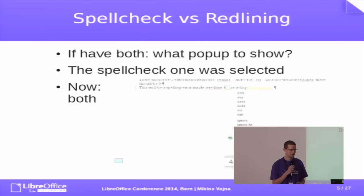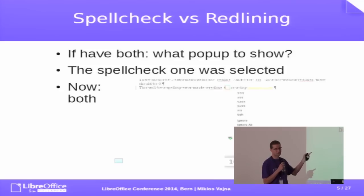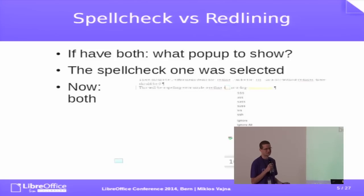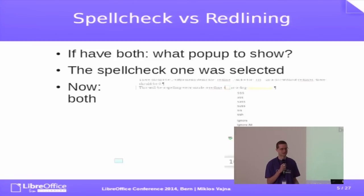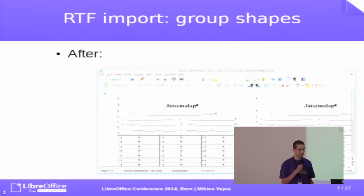The current pain with redlining was that if you had a spelling error in a redlining text — so somebody typed some new string and that string contains a spelling error — then when you right-click to correct the spelling error, the spell-check popup menu comes up and you can't reject the change. The solution is to combine the two popup menus: if you are inside change-tracked text and still have a spelling error, you can do both — completely reject that insertion, or just correct the spelling problem.